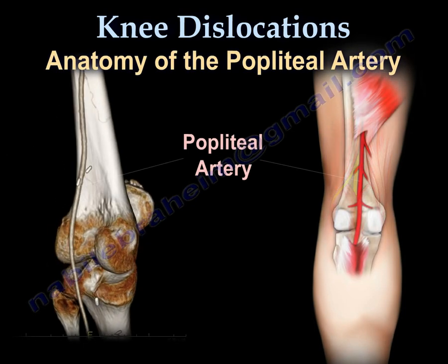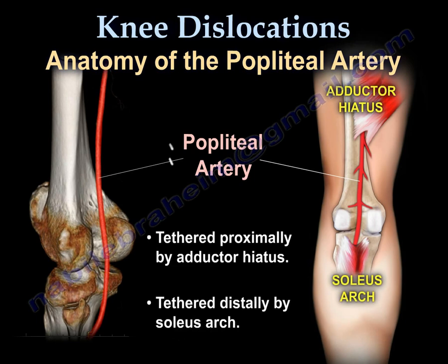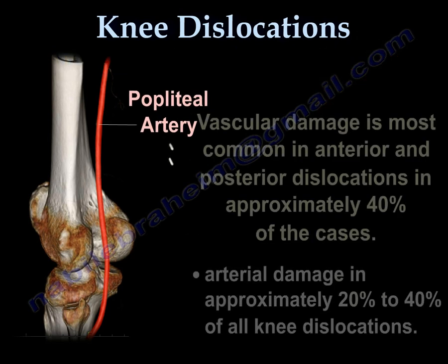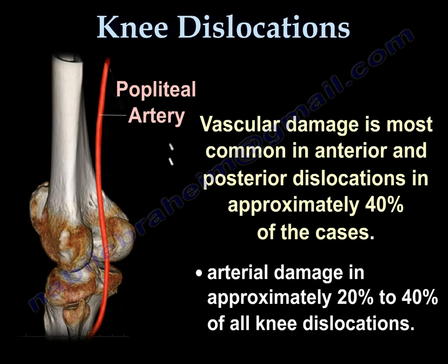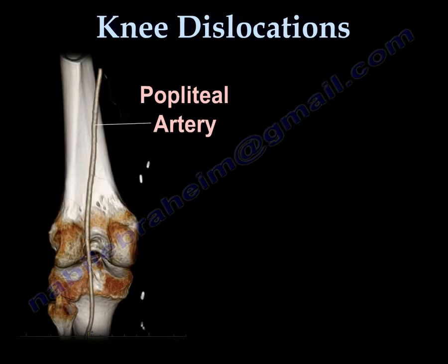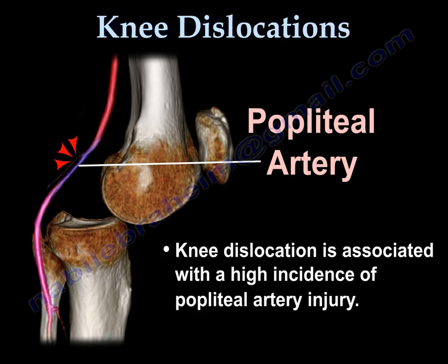Anatomy of the popliteal artery: The artery is tethered proximally by the adductor hiatus and distally by the soleus arch. Vascular damage is most common in anterior and posterior dislocations, occurring in approximately 40% of cases, with arterial damage in approximately 20–40% of all knee dislocations. Knee dislocation is associated with a high incidence of popliteal artery injury.